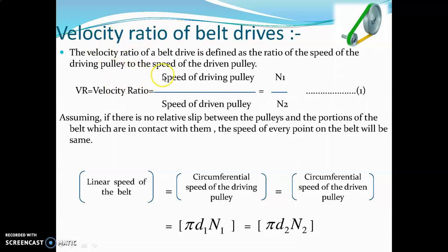Assuming there is no relative slip between the pulleys and the portions of the belt which are in contact with them, the speed of every point on the belt will be the same.